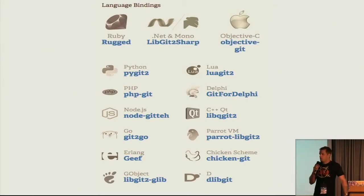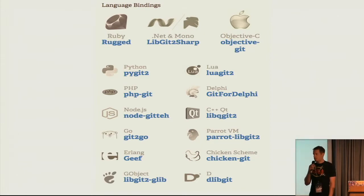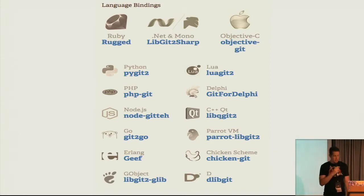We use this for GitHub.com. We use this for GitHub for Mac and GitHub for Windows. The Microsoft guys are building it into Visual Studio now. It's used all over the place. I think TortoiseGit uses libgit2. So we're getting lots and lots of users and clients that use this.